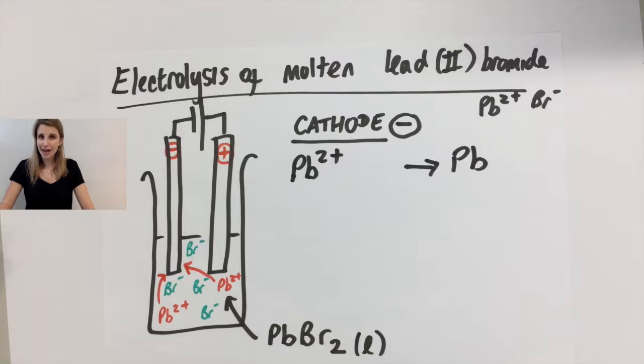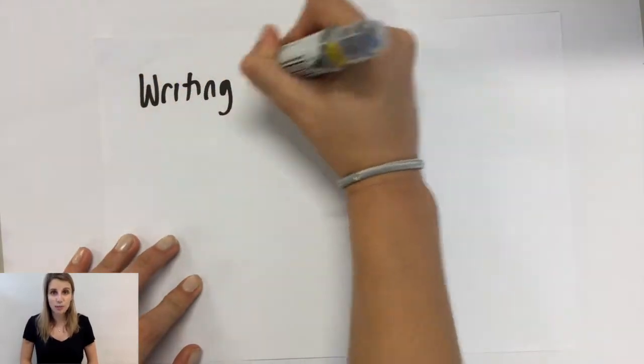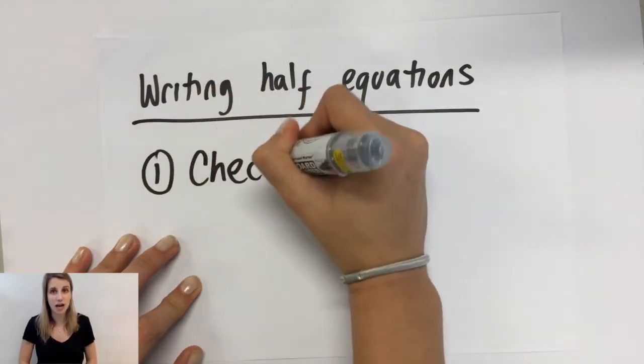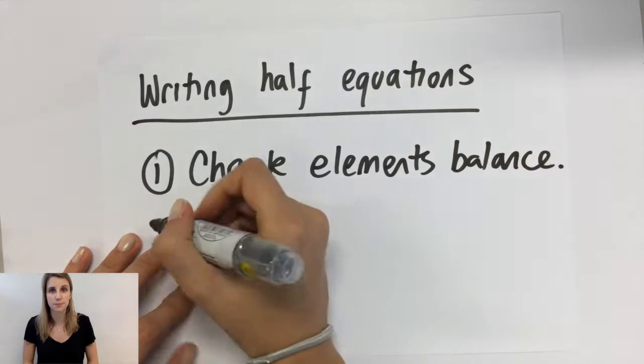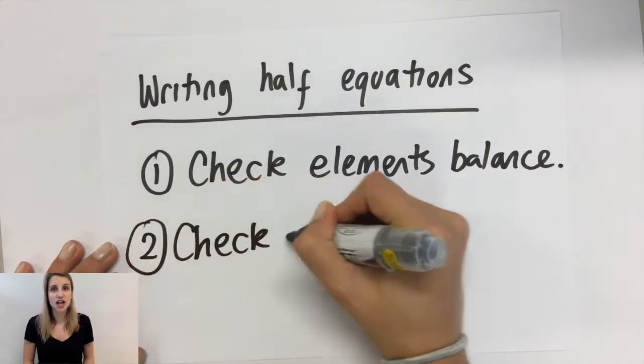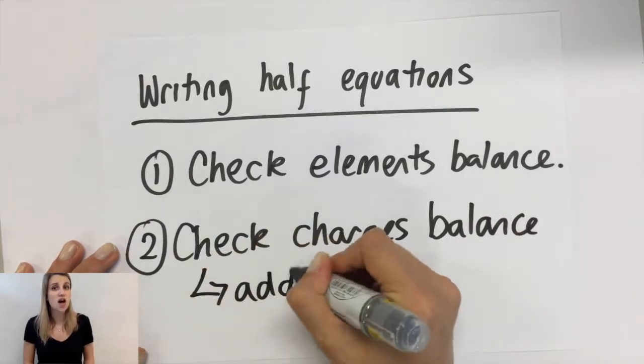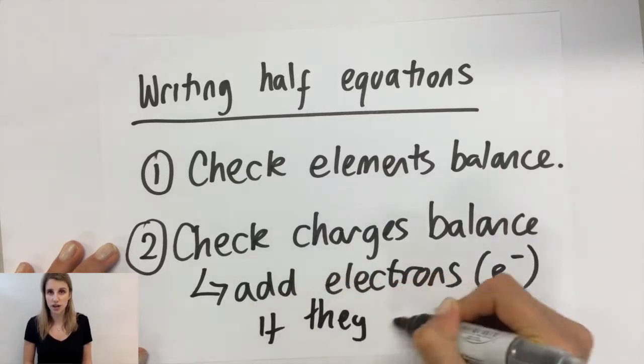Now what we need to do is to work out how that happens, and we show this using a half equation. So let's check out how to write one of those. The first thing you need to do with your half equation is to check that the elements in your equation balance, so making sure that you've got the same number of each element on each side, like you would with a normal balancing equation. The second thing you need to do is to check that the charges balance on both sides. If they don't balance, the way that we fix this is we add electrons to one side of the equation.